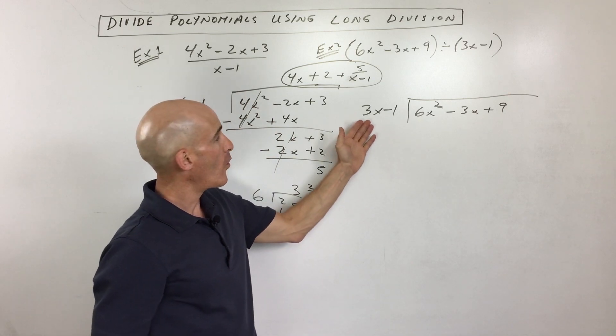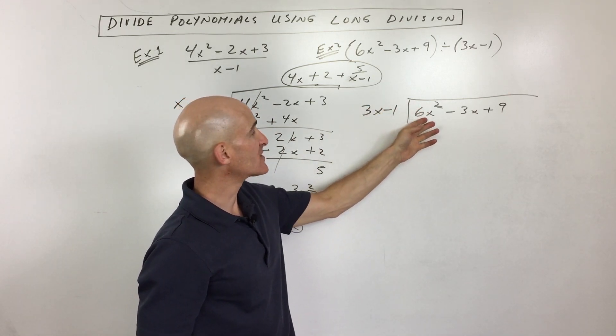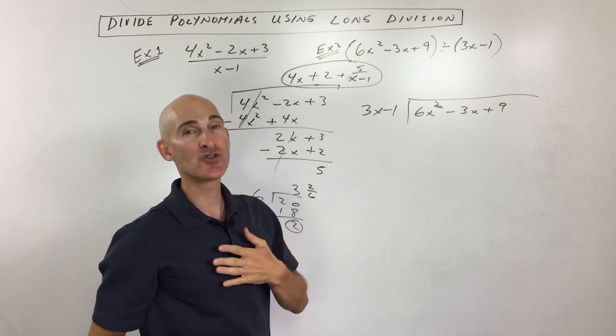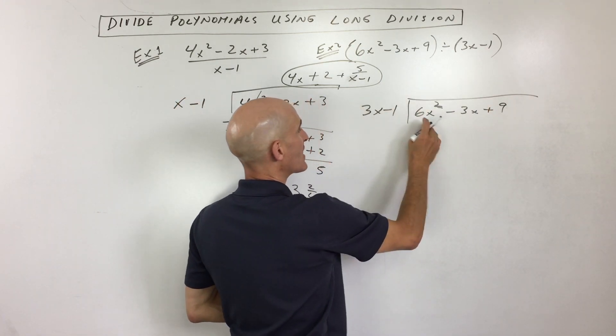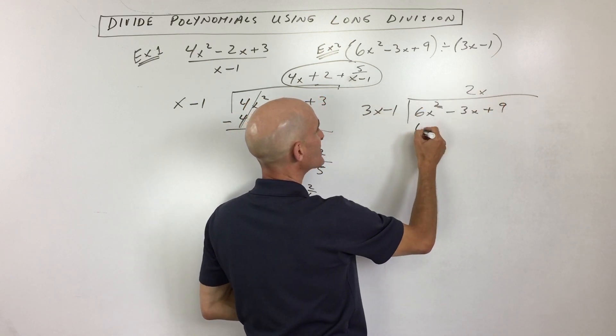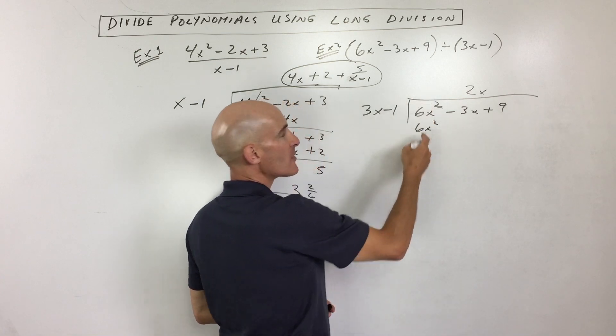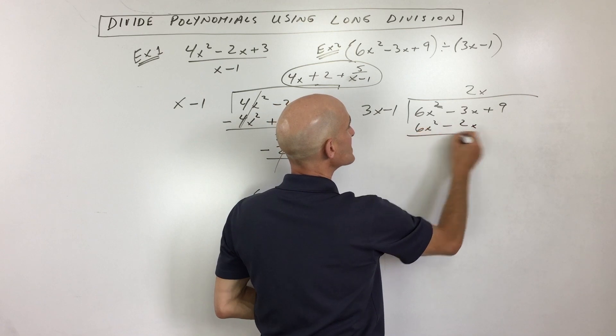So how many times is 3x going to 6x squared? Or you could say what's 6x squared divided by 3x? Or you can do it my way, which is to basically just say what times 3x is 6x squared? And that's going to be 2x. So if I distribute the 2x, I get 6x squared. You always want to match that first term. So when you subtract, they cancel out. 2x times negative 1 is negative 2x.